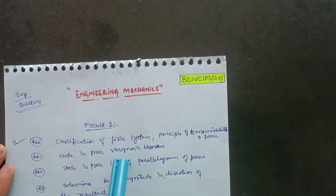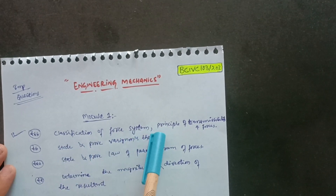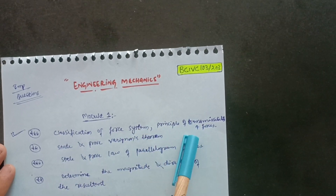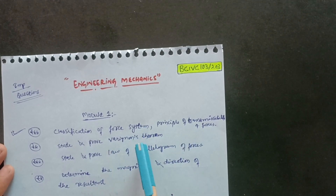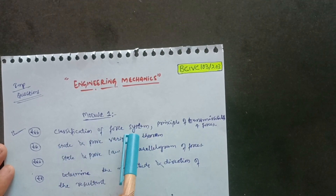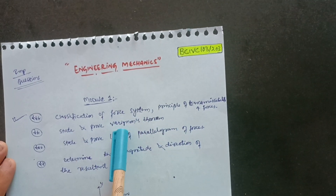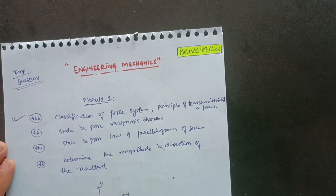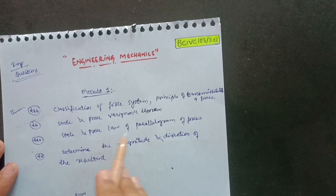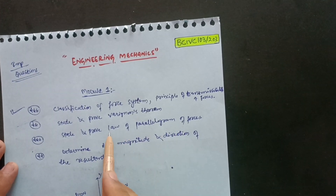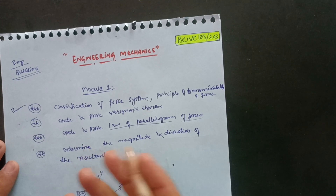In Module 1, the first important question is the classification of force systems and the principle of transmissibility of forces. There may be definitions like what is force, classification of force systems, and sometimes the principle of transmissibility. Also important: state and prove Varignon's theorem. Additionally, state and prove the parallelogram law of forces — this is a simple and important one you may have already covered.